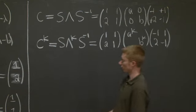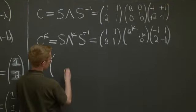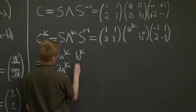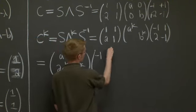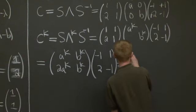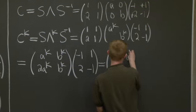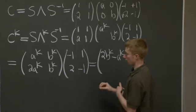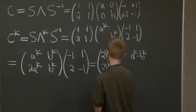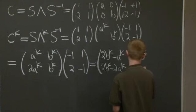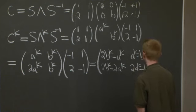Good, and multiplying these matrices together, just do a little arithmetic here, get a bunch of powers of A and B, because we take powers of the eigenvalues. We have here, we have 2B to the K minus A to the K, have A to the K minus B to the K, have 2B to the K minus 2A to the K, and finally we get 2A to the K minus B to the K. And this is our K-th power matrix, good.